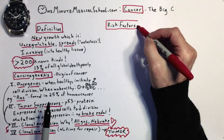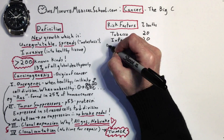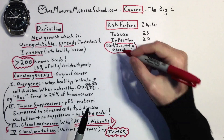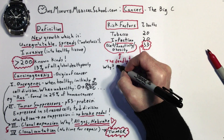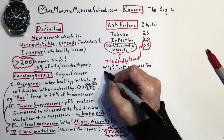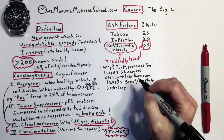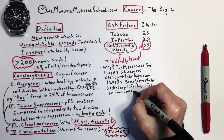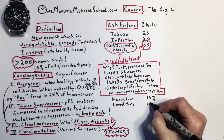This leads to tumors. Risk factors include tobacco and infection, diet and activity — obesity is linked to one third of cancer deaths. Each of these is a unique risk, but they're often found together in individuals. Radiation and heredity are also important.